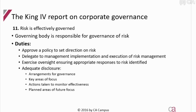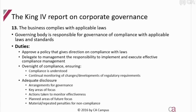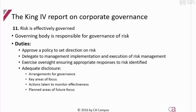Governance of risk, governance of information technology, governance of compliance with applicable laws, and stakeholder governance — they all have the same duties, barring some specifics. When you look at their duties, the governing body is responsible to approve the policy that deals with risk, information technology, compliance with laws, and stakeholder governance. Then they will delegate to management the implementation of that policy. Then they will exercise oversight over that function.